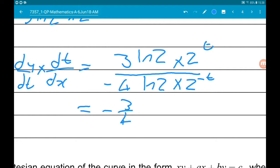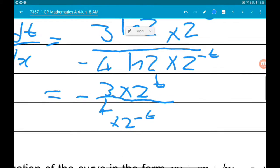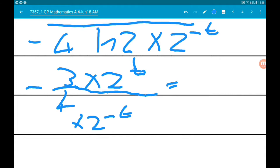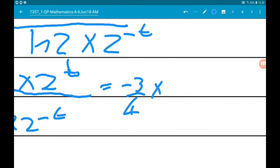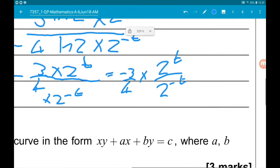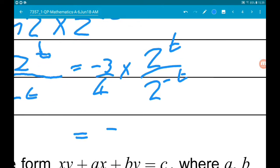And then we've got up on top, we've got times 2 to the t and on the bottom times 2 to the minus t. Now we can think of that as minus 3 quarters times 2 to the t over 2 to the minus t, which finally does equal minus 3 quarters times 2 to the 2t. Done.